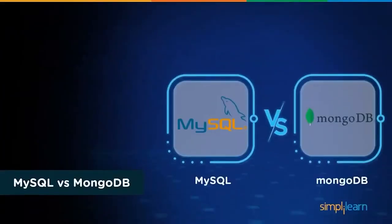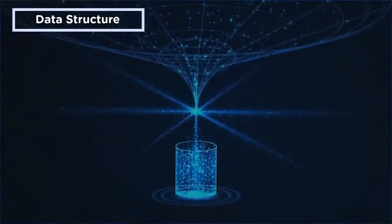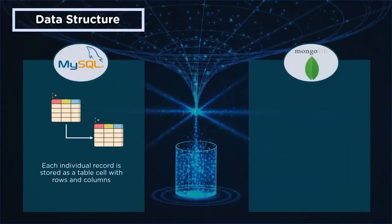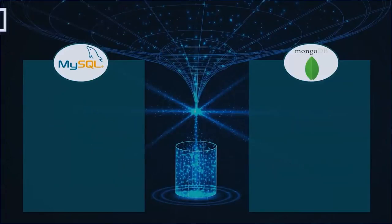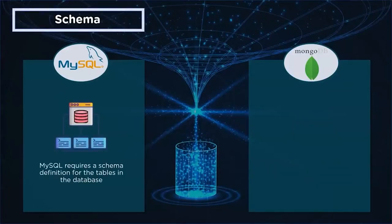So what sets them apart? First is data structure: MySQL requires you to define tables and columns before storing anything, and every row must have the same columns. In MongoDB, you just drop the data into documents, and data is stored in the binary format called BSON. Regarding schema: MySQL requires a set schema defined by the database administrator, which is crucial. MongoDB, on the other hand, doesn't require a prior schema definition.